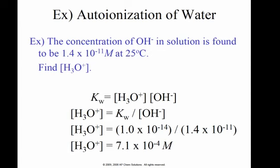If the concentration of a hydroxide solution is found to be 1.4 times 10 to the negative 11th, what is the concentration of hydronium? Well, I have this value right here, it's 1 times 10 to the negative 14th. I have this value right here, it's 1.4 times 10 to the negative 11th. I simply solve for hydronium, and you get 7.1 times 10 to the negative 4th.